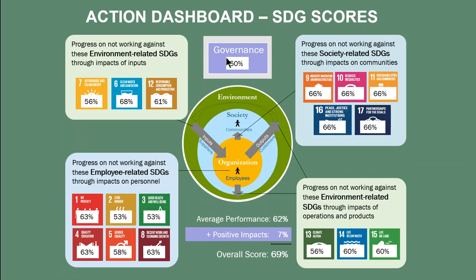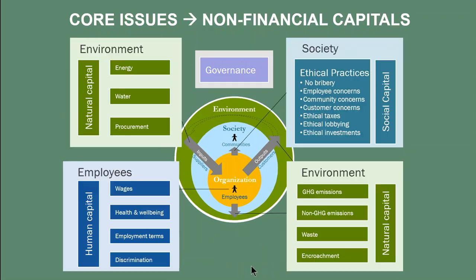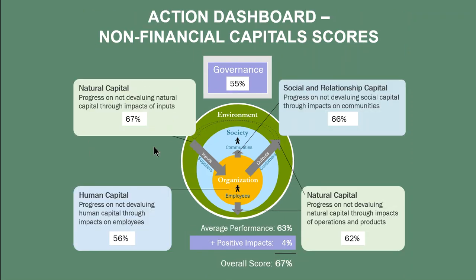We can come up with scores on each of them individually, as well as overall, plus the positive impacts for them as well, and an overall score on them. Similarly, in terms of the non-financial capitals — natural capital, human capital, and social capital — if we've got scores on their associated ESG issues, we've got scores on the capitals, both overall as well as adding in a bonus score for positive impacts for an overall score.